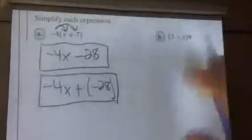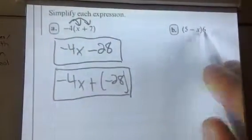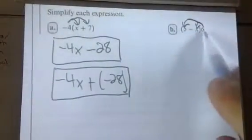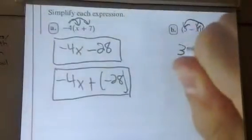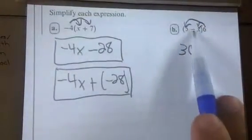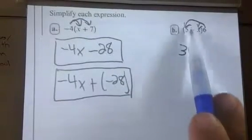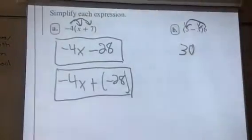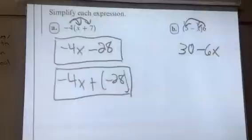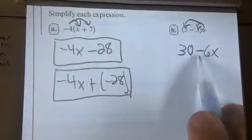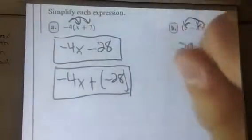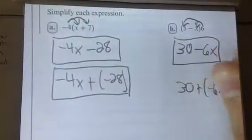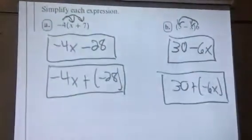Notice the 6 is on the right side — that does not matter. We're still distributing it to both terms. 6 times 5 gives me 30. Now look at this subtraction sign — I told you to view that as a negative. So this is just like a negative x, meaning 6 times negative x gives me minus 6x. So this is 30 minus 6x. Or, if it helps, you can write this as 30 plus negative 6x. Subtraction is the same thing as adding the opposite.